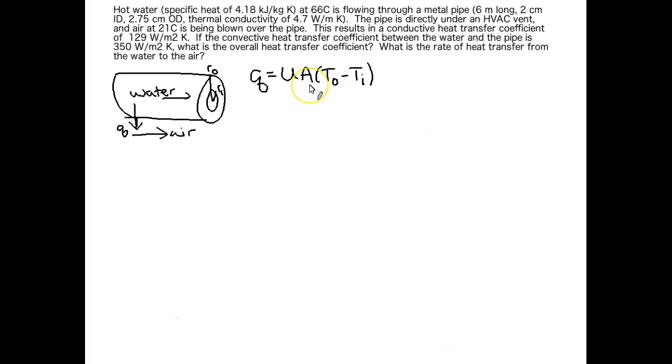We're given enough information to calculate our area, we are given our temperatures, we need to solve for Q, and we also need to solve for U, the overall heat transfer coefficient. Since we have two unknowns in this particular equation, we're going to need another equation to solve for U. So let's write that down now. There you have it. This is how we're going to find U.